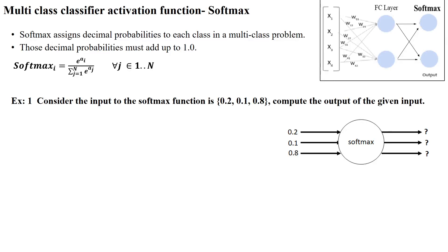The convolutional neural network has two types of classification: multi-class classification and binary class classification. For binary class classification we can use the sigmoid activation function, but for multi-class classification we have to use the softmax classifier.